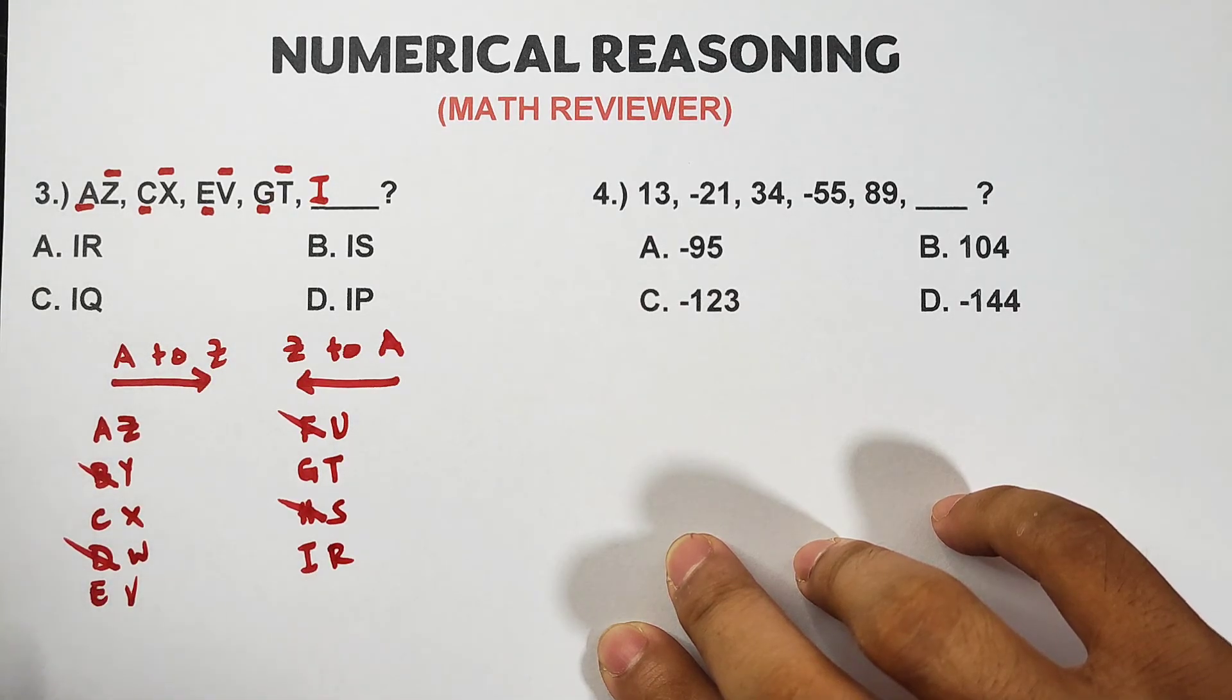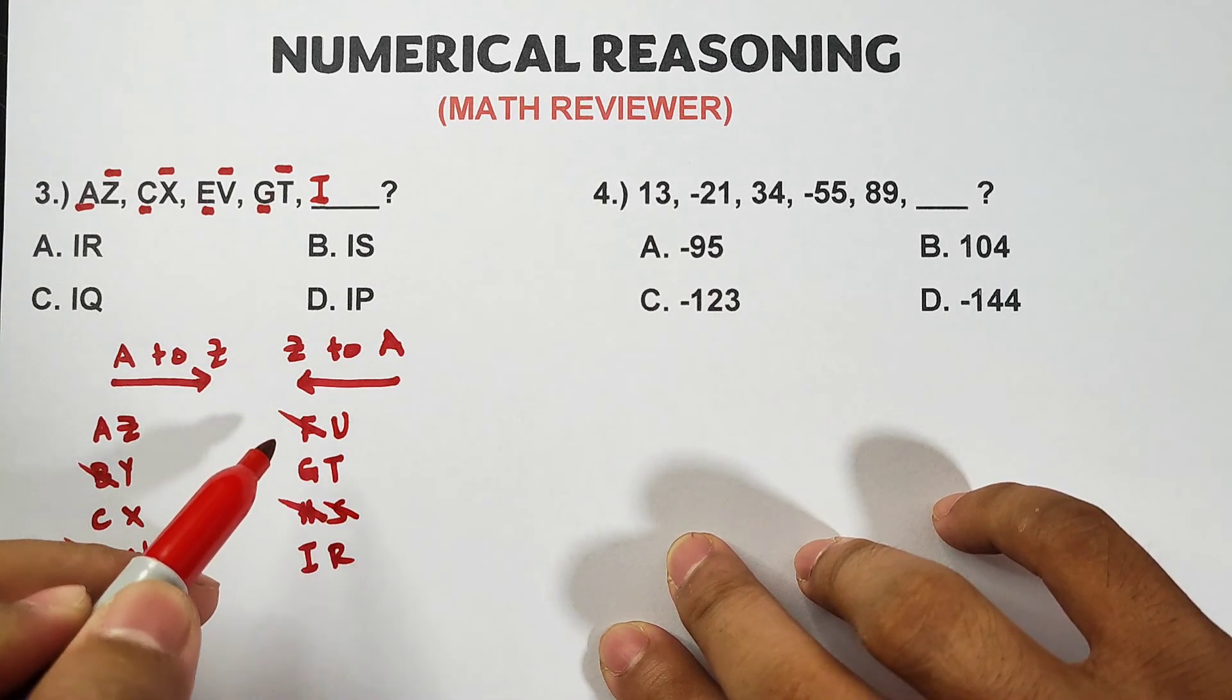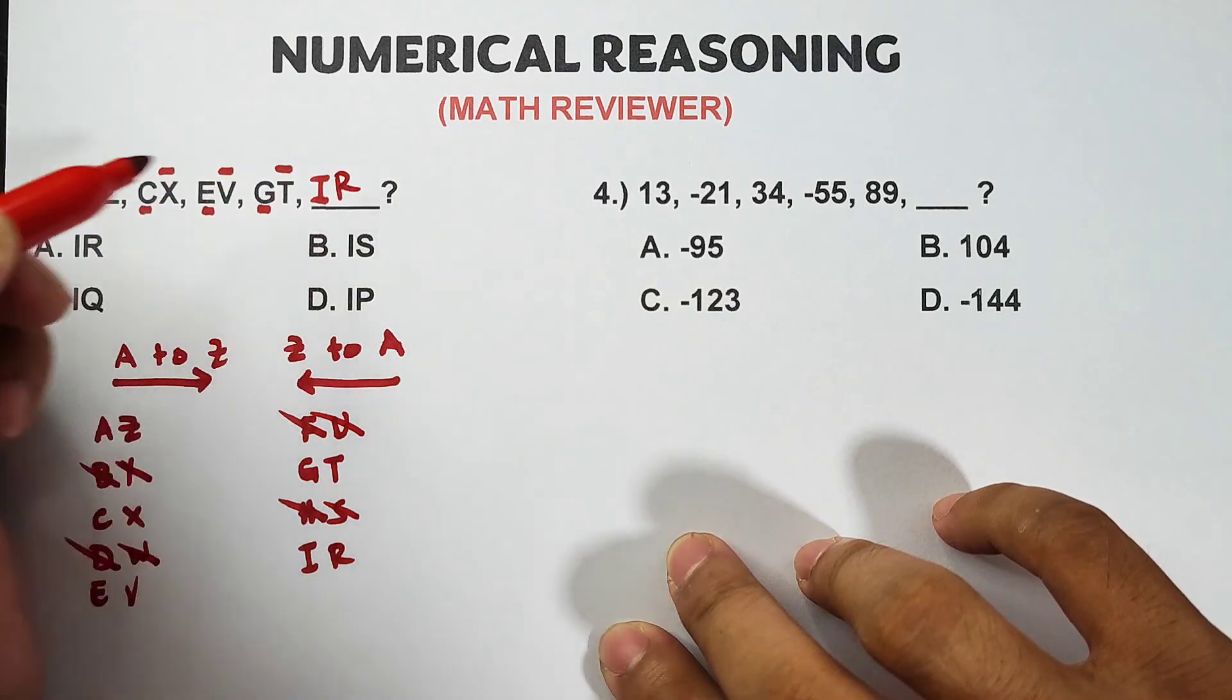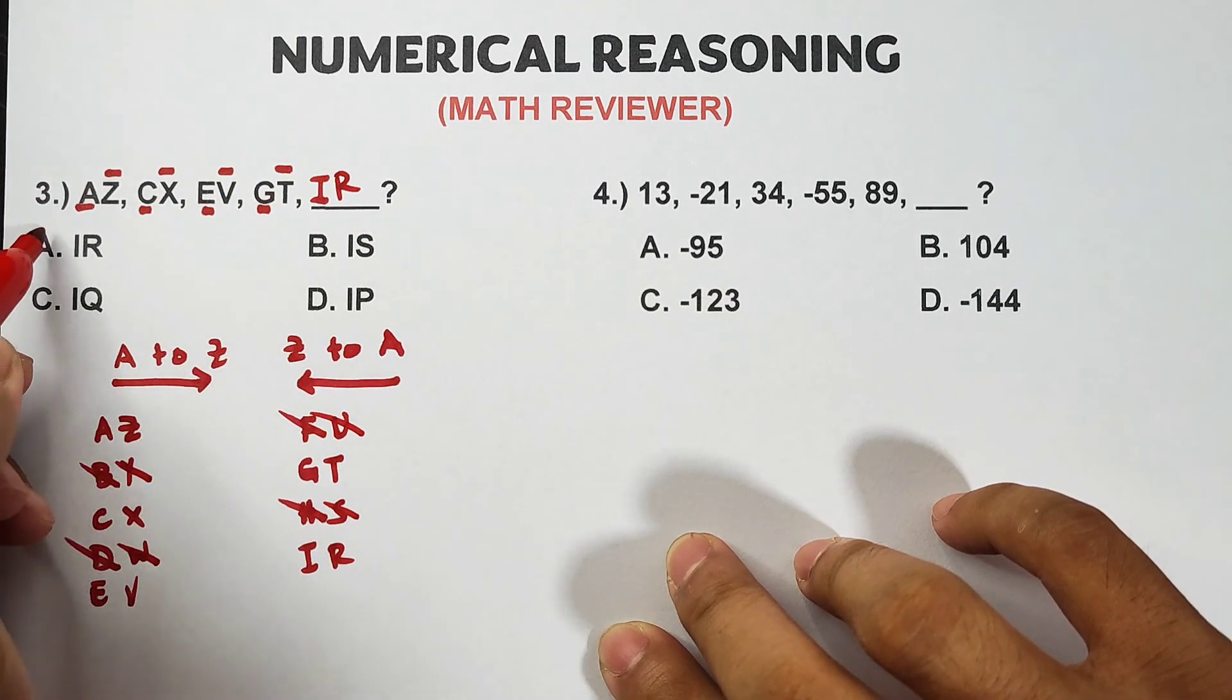Now you can probably see the correct answer. This one doesn't have it, this one doesn't, this one doesn't, and this one doesn't. Meaning IR is the correct answer. So the correct answer is letter A.